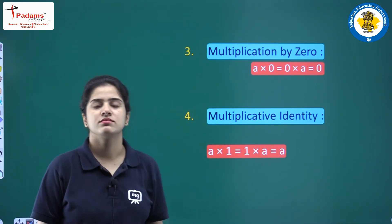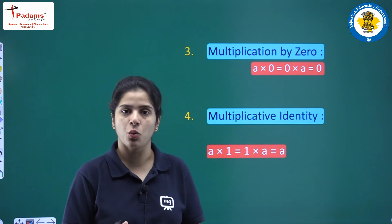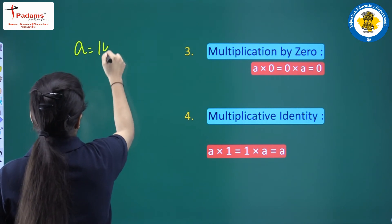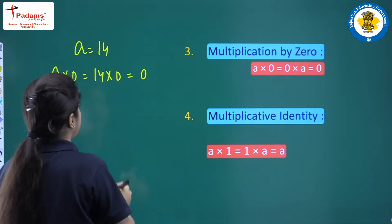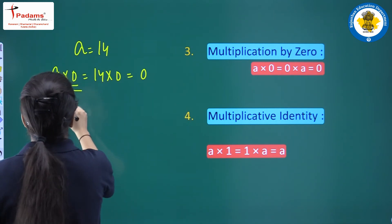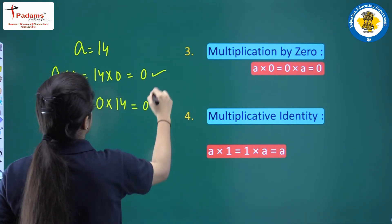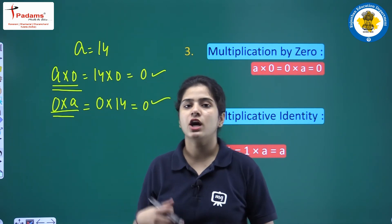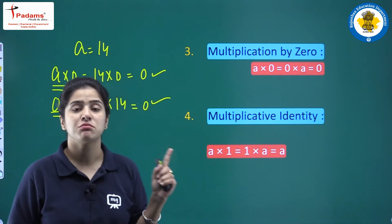The next property is multiplication by zero. If any integer is multiplied by 0, the answer will be 0. For example, if A = 14, then 14×0 = 0. By the commutative property, 0×14 is also 0. So A×0 = 0×A = 0 for any integer A.